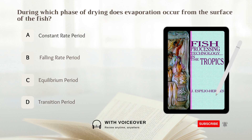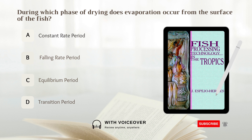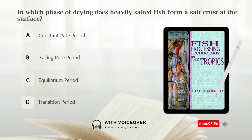During which phase of drying does evaporation occur from the surface of the fish? A. Constant rate period. B. Falling rate period. C. Transition period. Answer: A. Constant rate period.